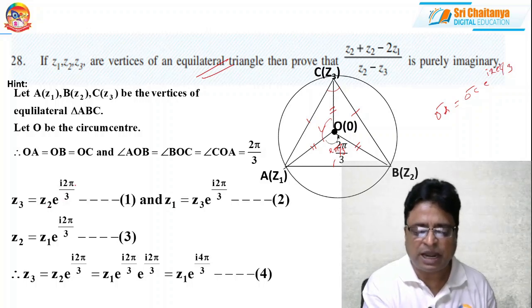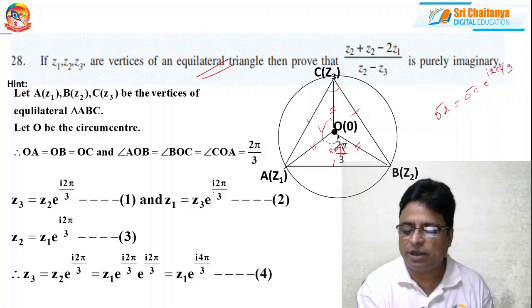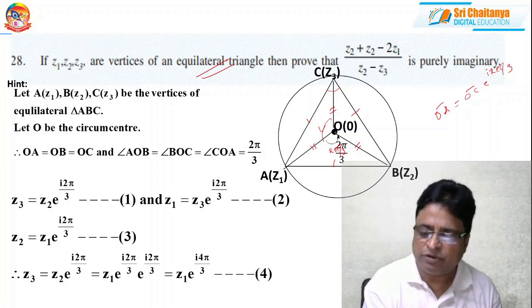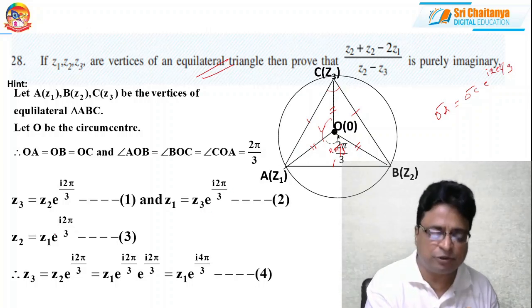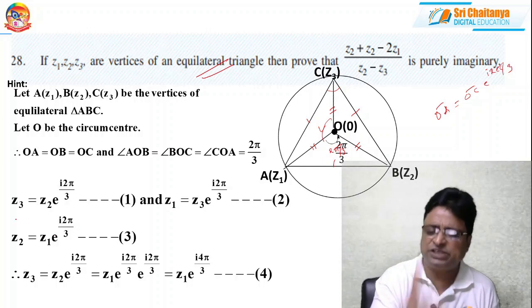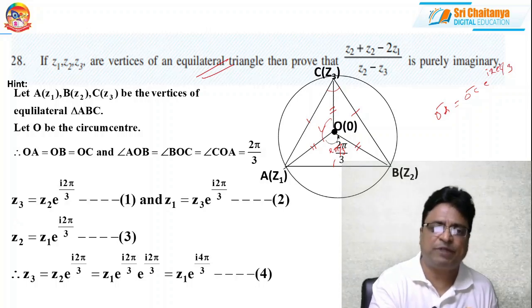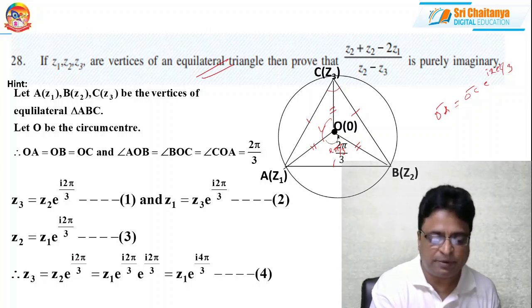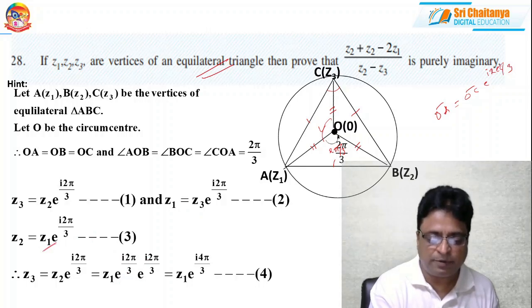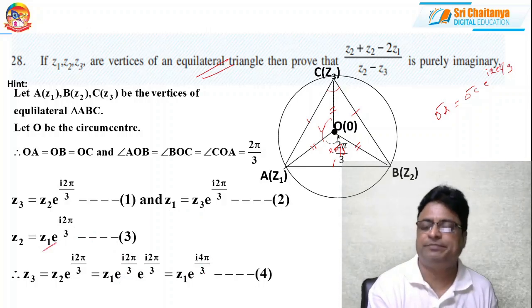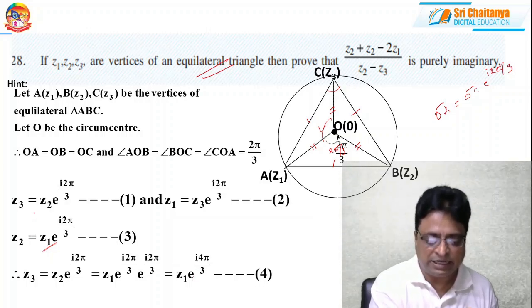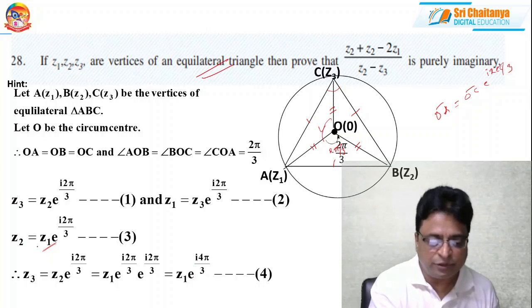So Z3 equals Z2·e^(i·2pi/3). And Z1 equals Z3·e^(i·2pi/3). Z2 equals Z1·e^(i·2pi/3). Fix one direction — either clockwise or anticlockwise — and find Z1, Z2, Z3 in terms of the other vertex. So Z3 equals Z2·e^(i·2pi/3). Substituting Z2 equals Z1·e^(i·2pi/3), we get Z3 equals Z1·e^(i·2pi/3)·e^(i·2pi/3), that is Z1·e^(i·4pi/3). So I have Z2 in terms of Z1 and Z3 in terms of Z1.